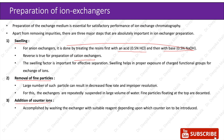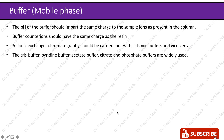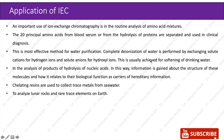Now after the stationary phase is ready, next is the mobile phase — that is, the buffer. The pH of the buffer should impart the same charge to the sample ions as present in the column. Buffer counter ions should have the same charge as the resin. Anionic exchanger chromatography should be carried out with cationic buffers and vice versa — that is, cationic exchanger chromatography should be carried out with anionic buffers. The Tris buffer, pyridine buffer, acetate buffer, citrate, and phosphate buffers are widely used.